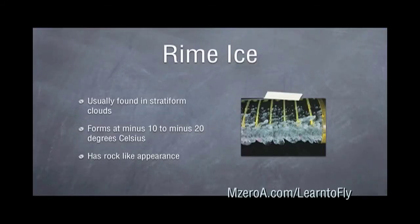First let's take a look at the different types of icing. The first type is rime ice. Rime ice is usually found in stratiform clouds and forms at minus 10 to minus 20 degrees Celsius. It also has more of a rock-like appearance.